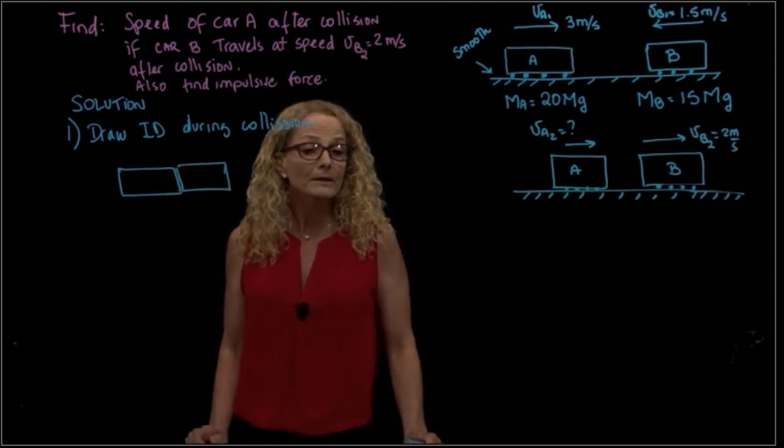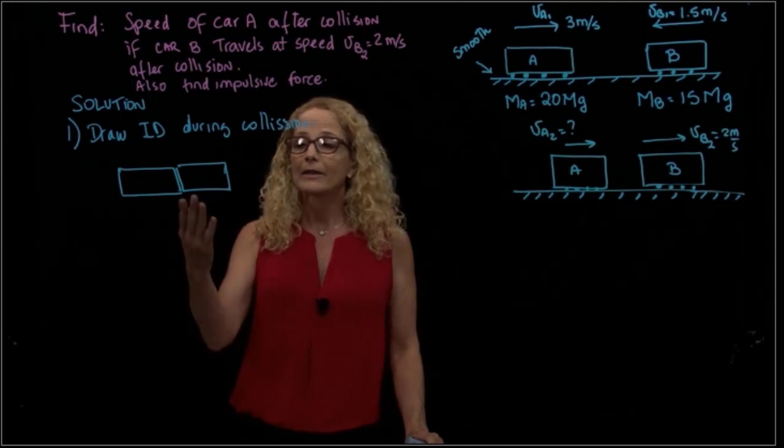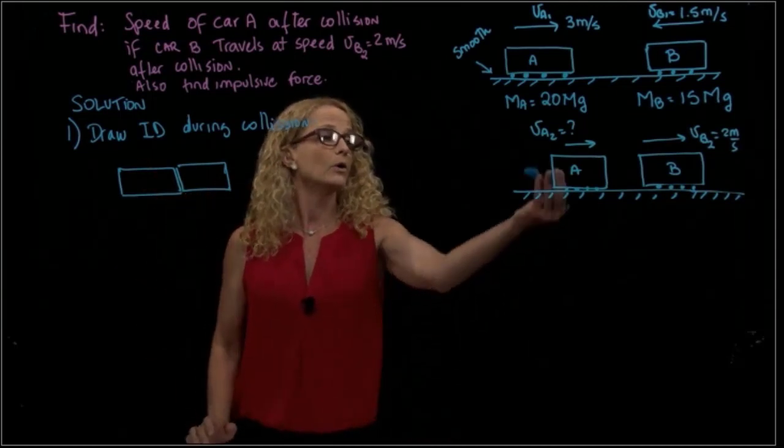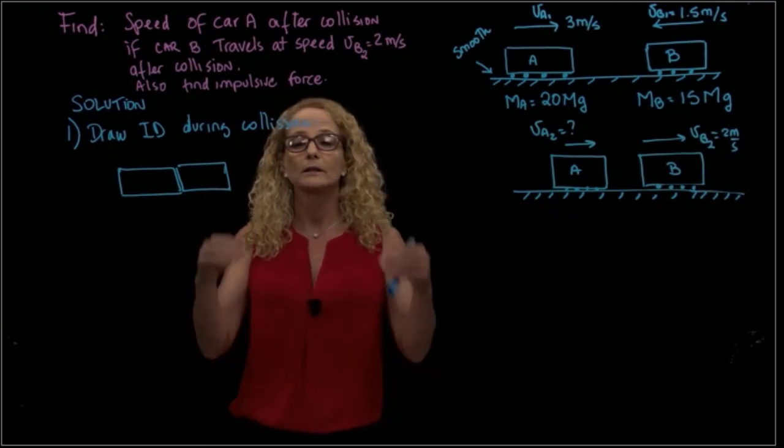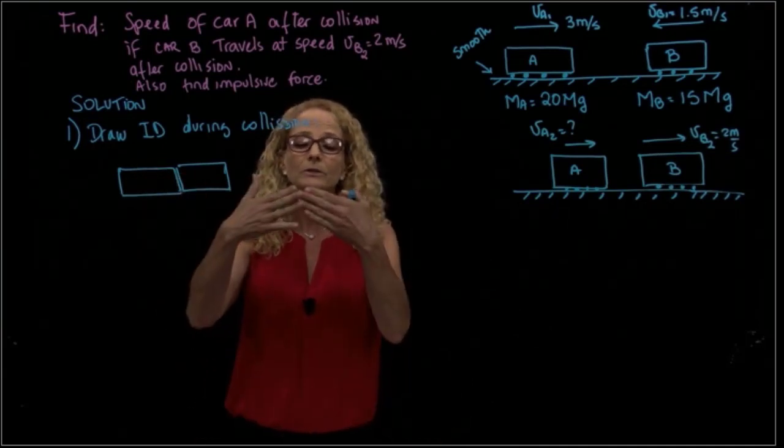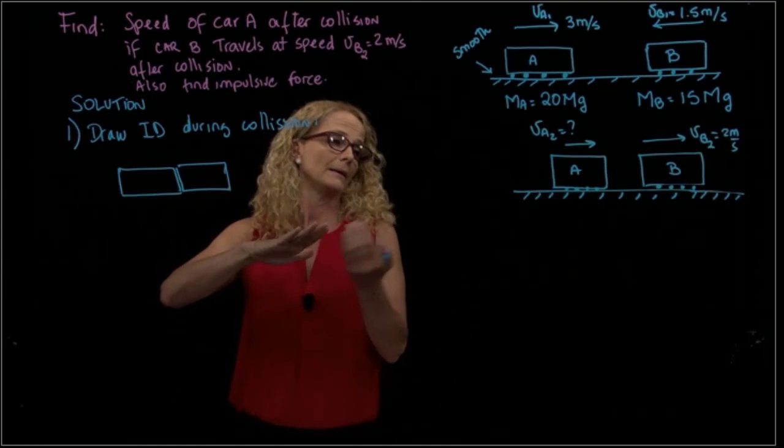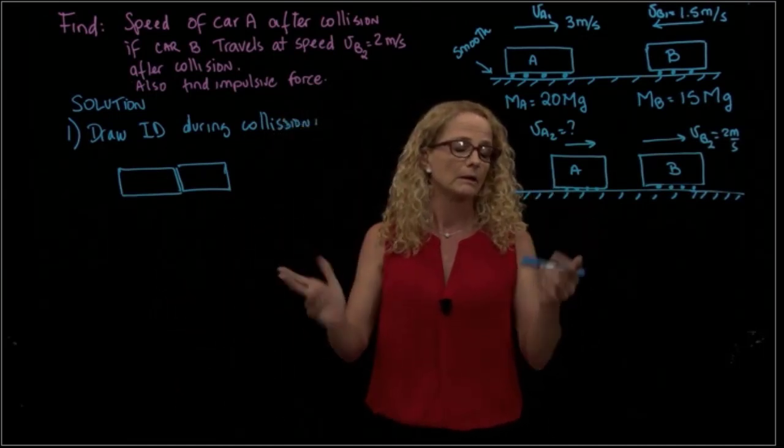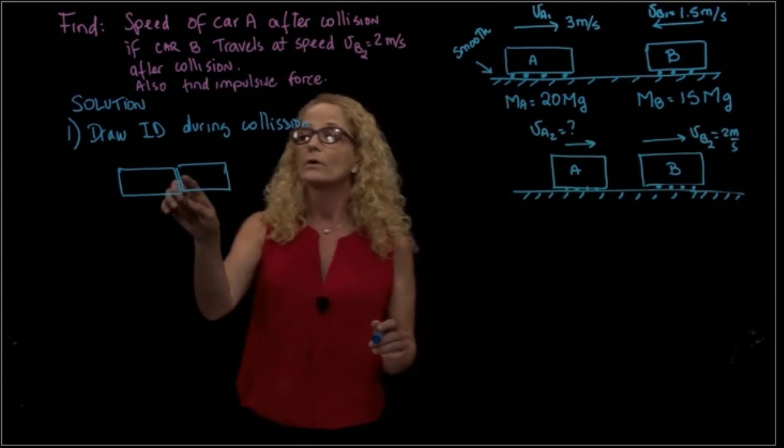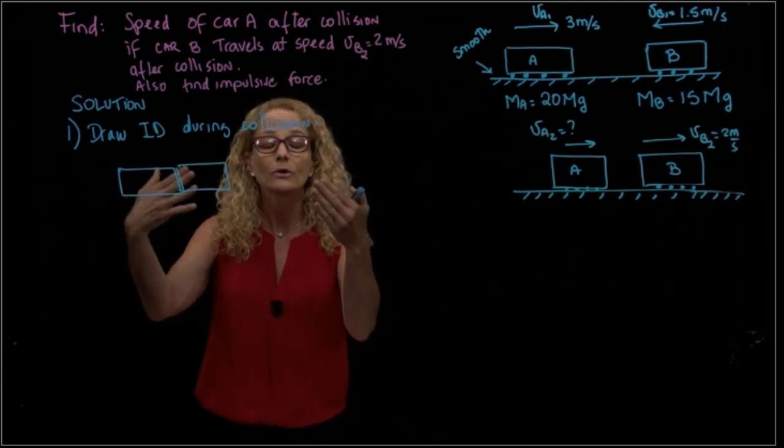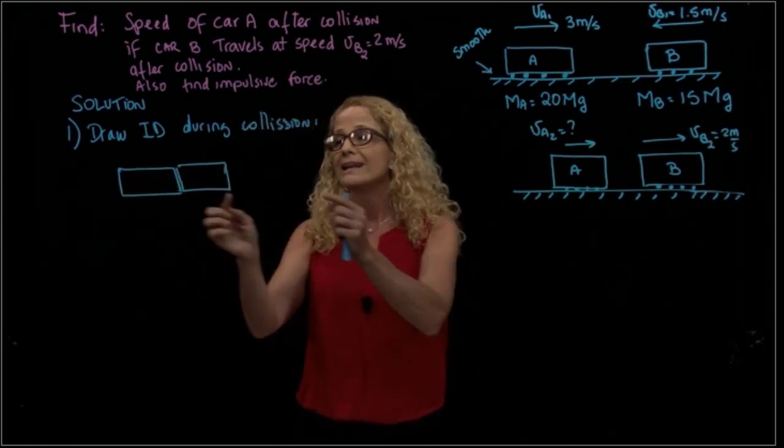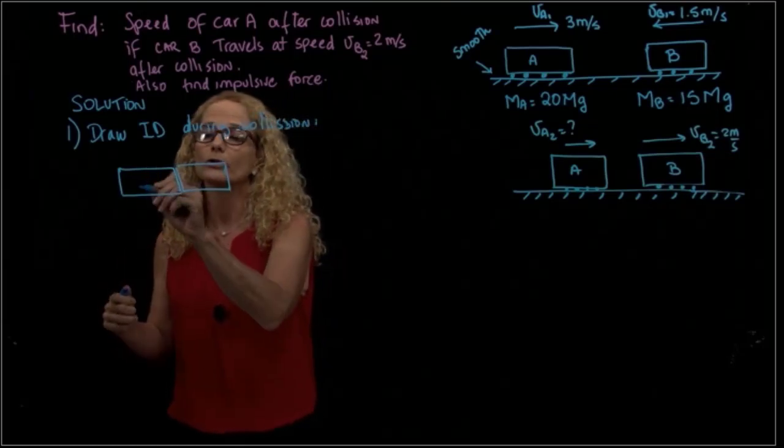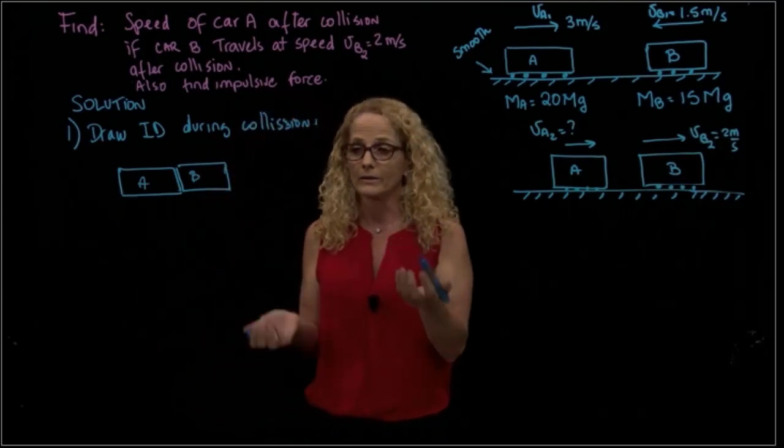When I draw an impact diagram, it's different from drawing a free body diagram because I'm not drawing the weight or the normal forces. Since I have a collision in the x direction, the surface doesn't make any reaction. Since I'm drawing those two cars together, the impact between them becomes an internal force and doesn't appear.